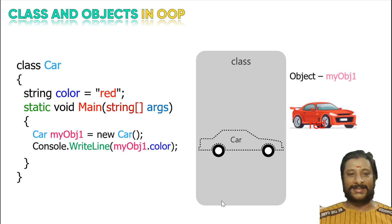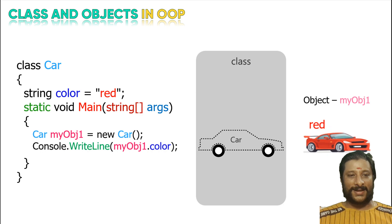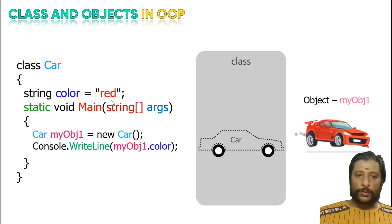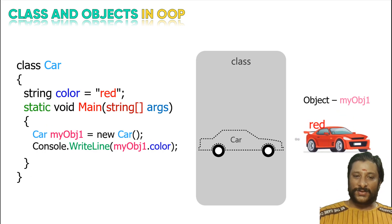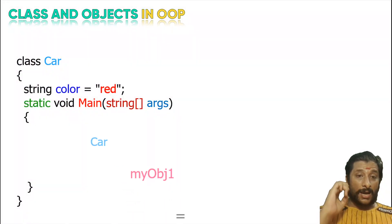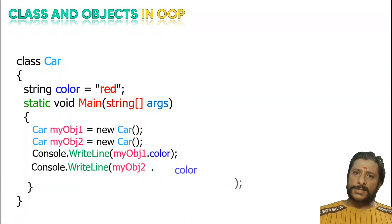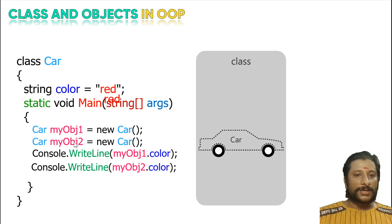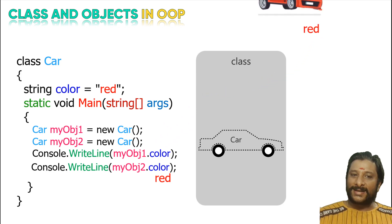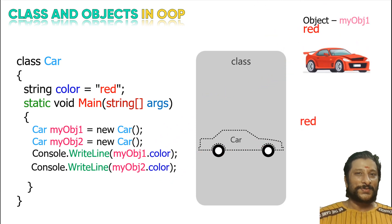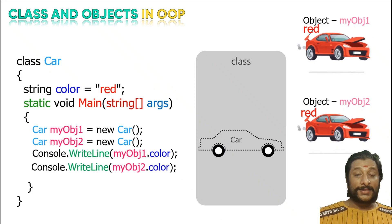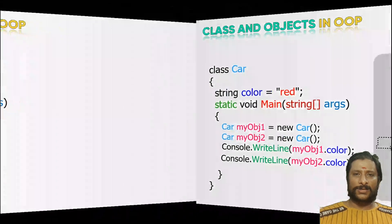The object name is myobj1 — you can have any name. The red color car is created. If you want two cars, it is possible. You can have object1 and object2 — red for one and another color for the other. Two color cars are created. The coding is very easy. You got two cars now.